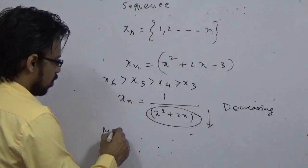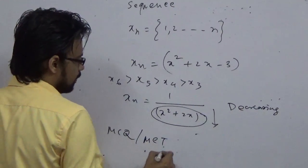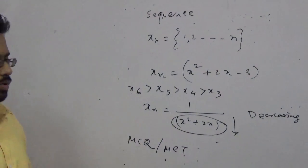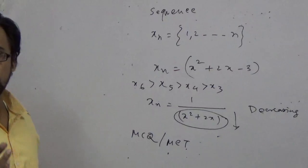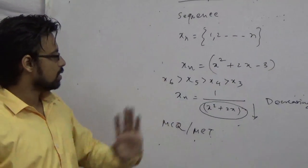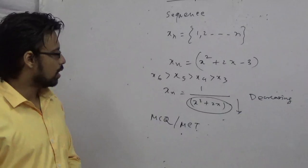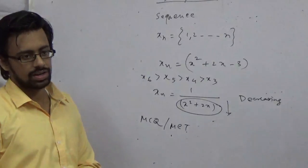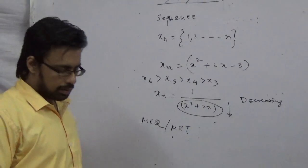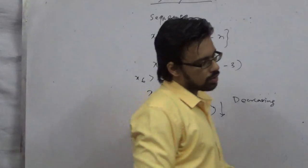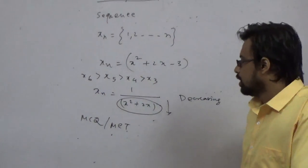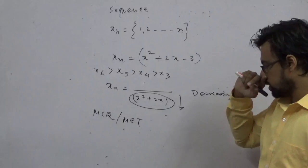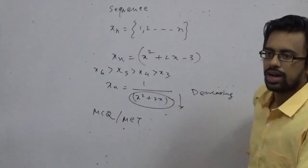In examinations, the format is MCQ or MCT — multiple choice type means one question with 4, 5, or 6 options where more than one may be correct. For increasing or decreasing, you can just put a value and cross-check, which is not possible in Maths Honours or higher level. You have to explain the entire structure. Whenever 1 is in the numerator and the rest is in the denominator, it is directly a decreasing function.